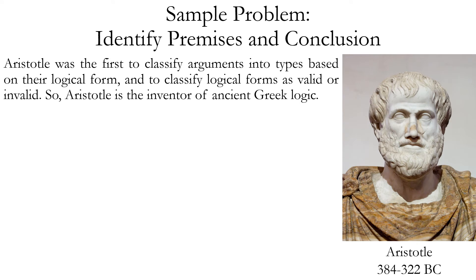Let's look at some sample problems where we identify the premises and conclusion of an argument. A couple of things to keep in mind: first, you won't always have premise or conclusion indicator words. If there are no indicators present, you have to rely on other clues, such as which statements can be used to prove others. If a statement can be proven by others, it's the conclusion; if a statement could be used to prove another, it's a premise. Also note that the order of premise and conclusion can vary — premise can go first, in the middle, or last. It's really the underlying logical connections between statements that help you identify them.